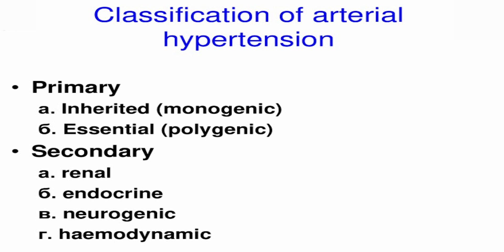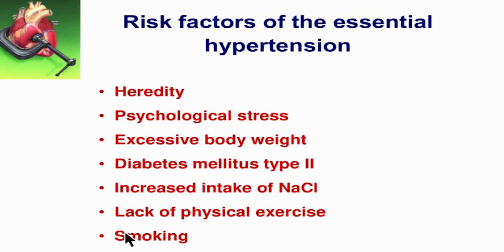Essential hypertension is far more widespread than monogenic hypertension, which is rare. Essential hypertension is a polygenic, polyetiological disease provoked by risk factors — not a single causative factor, but multiple risk factors. There are many different endogenous and exogenous groups of factors, both modifiable and non-modifiable.